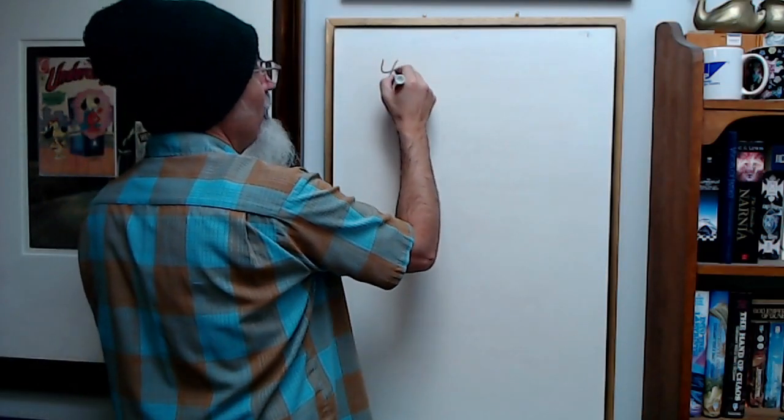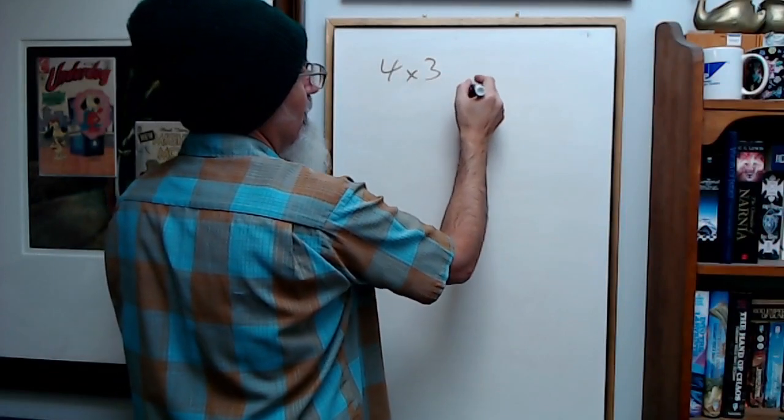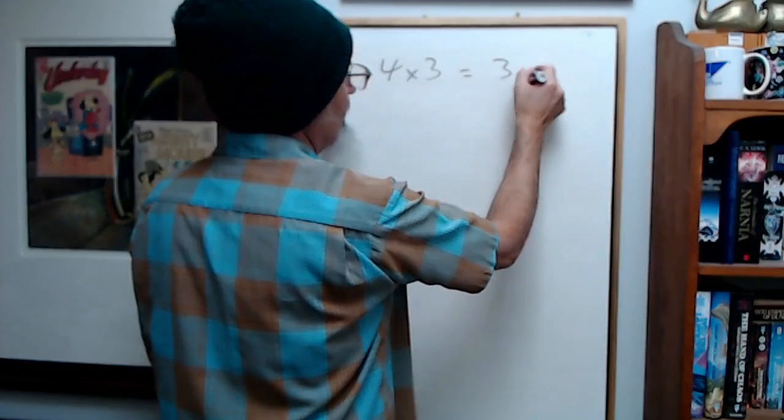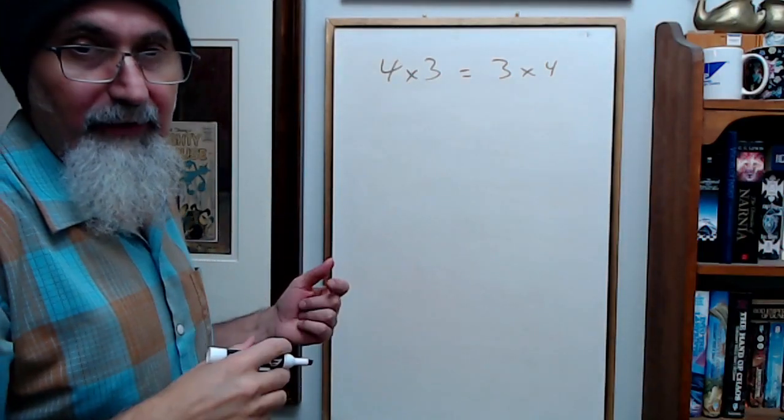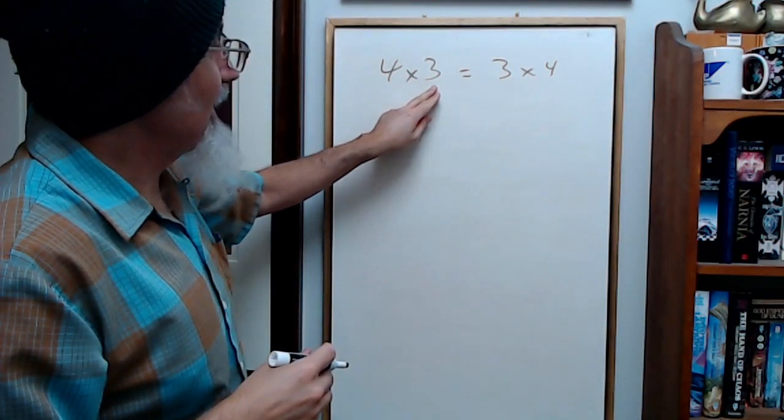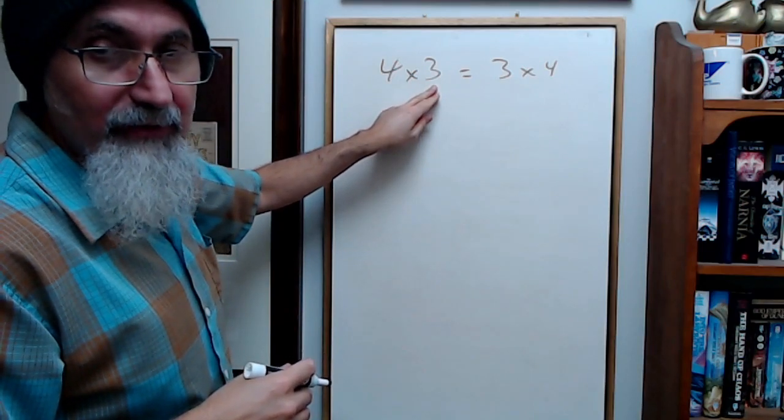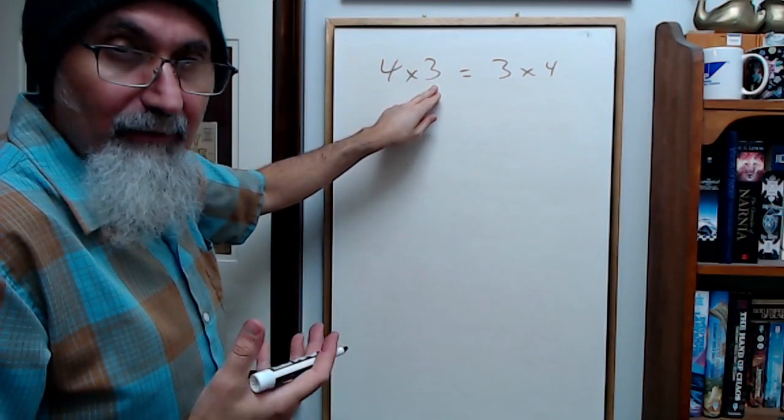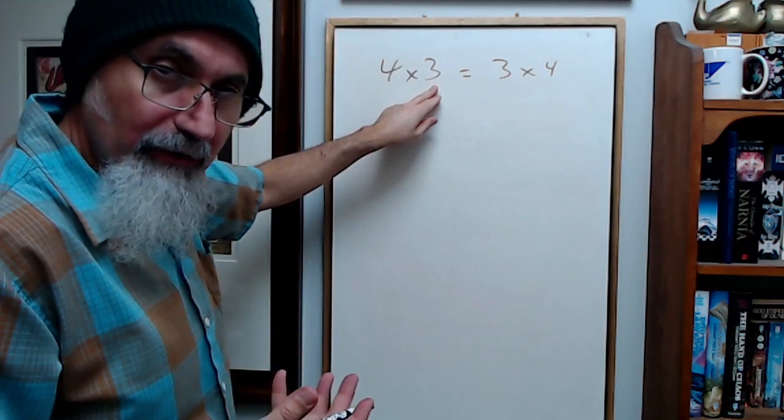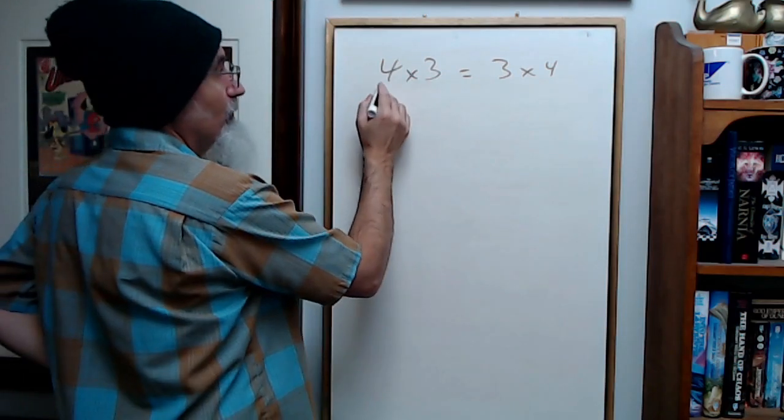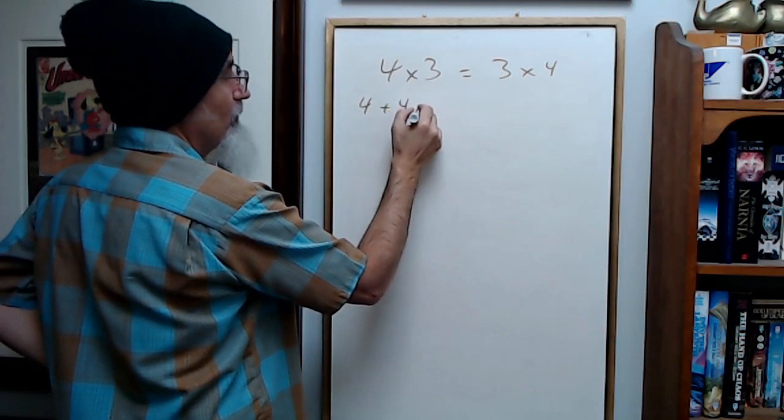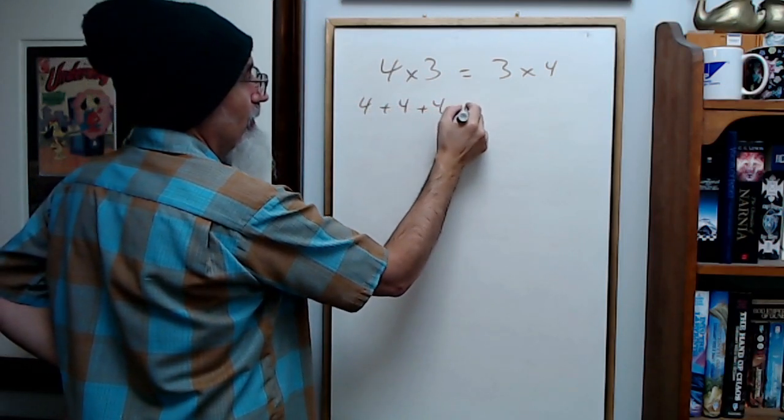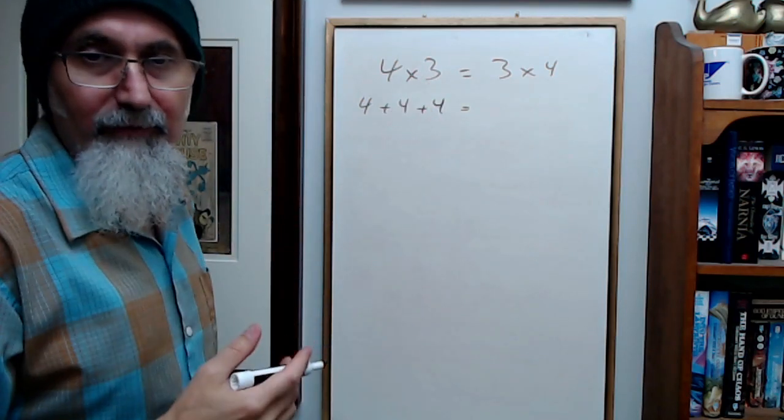Watch this: 4 times 3 is the same thing as 3 times 4, right? You can interpret 4 times 3 as saying 4 things added together 3 times. That's what multiplication is—multiplication is an extension of addition. So when you write this, you're saying 4 plus 4 plus 4. It's just a faster way of writing that.